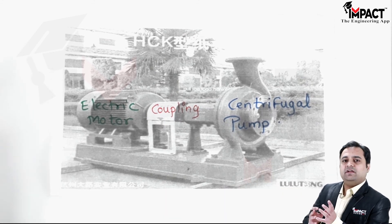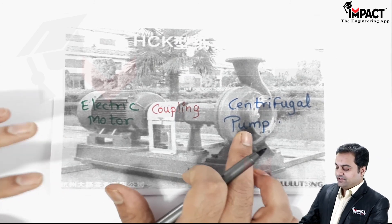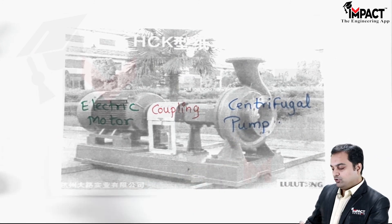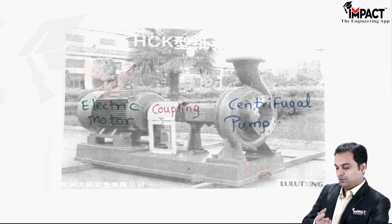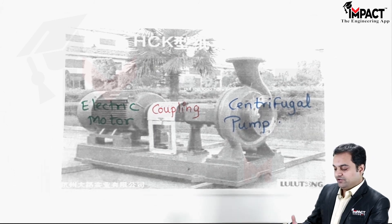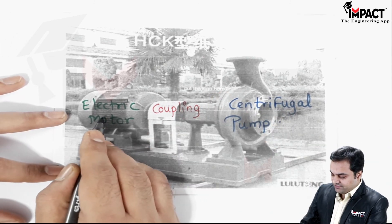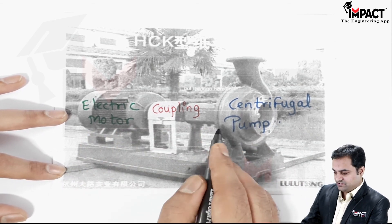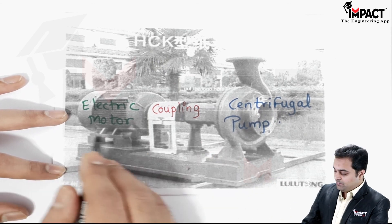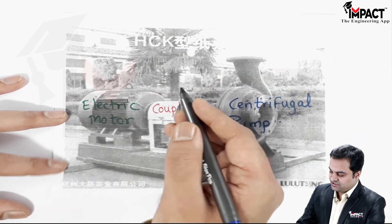Centrifugal pumps are machines used for high amounts of discharge — meaning a large quantity of fluid being pumped. Since the fluid here is water, centrifugal pumps deliver huge quantities of it. The electric motor is directly coupled to the impeller, making these high-speed machines.